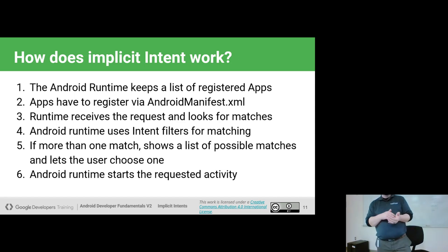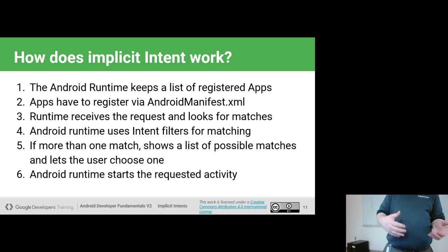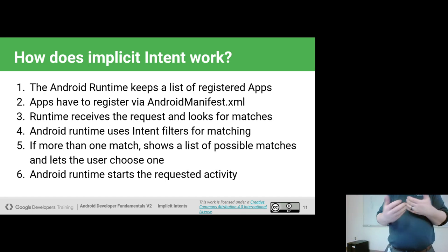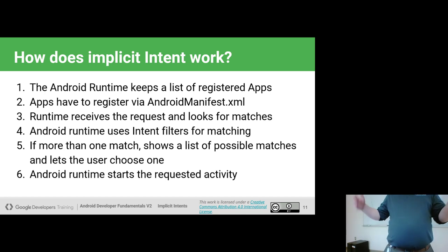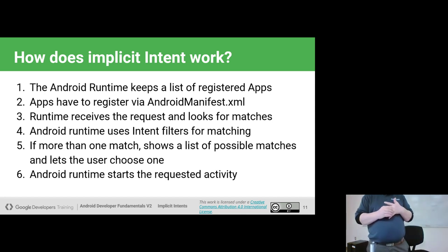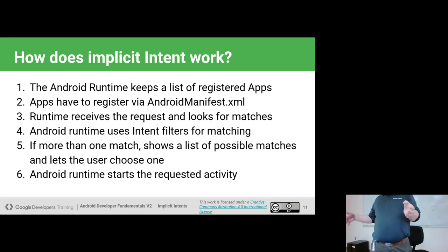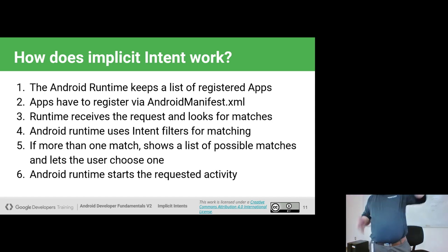The Android runtime keeps track of all the apps installed on your device and which of those apps have registered that they're interested in certain implicit intents. Any app on your phone can register for these implicit intents. The way you register is by declaring it in your manifest file. The operating system uses the manifest as a way to enter into your app — simply by saying you can handle this kind of thing, you become an option in the app chooser.